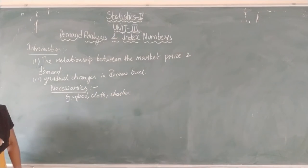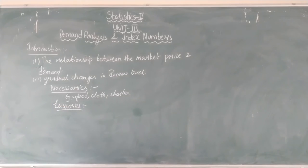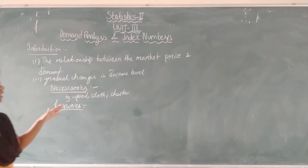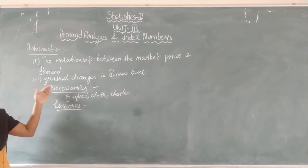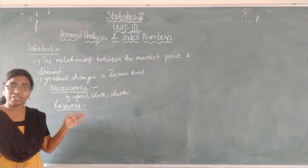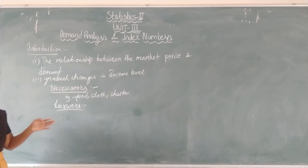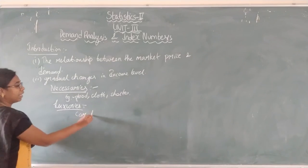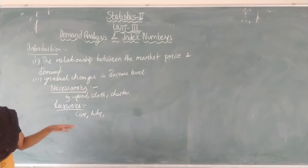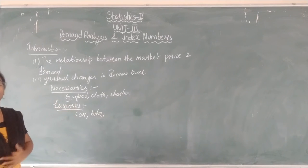Next is luxuries. What are luxuries? Luxuries are the goods or commodities which satisfy our luxury desires — without which people can live, but they want the most comfortable goods. Without these luxuries we can live without affecting our health. These are not primary goods; they depend on luxuries, like having a car or having a bike. Goods without which people can live without affecting their health are called luxury goods.